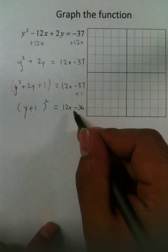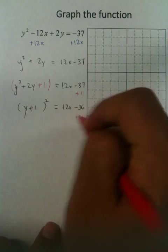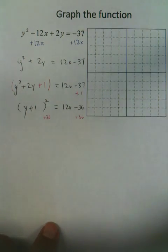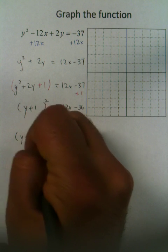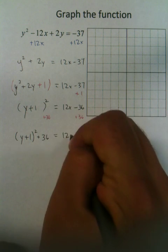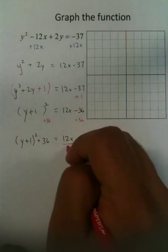Now, we just got to get X by itself. To get X by itself, we're going to add 36 to both sides of the equation. Now, since this is in parentheses, we're just going to leave it the way it is. Y plus 1 squared plus 36 equals 12X. And then from there, we're going to divide every single thing by 12.